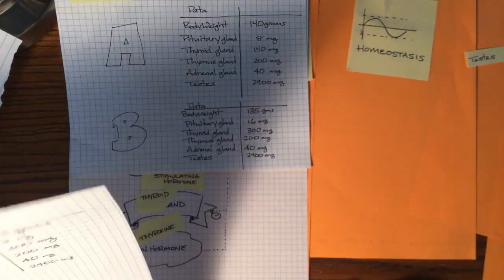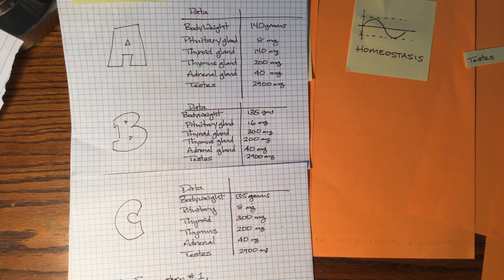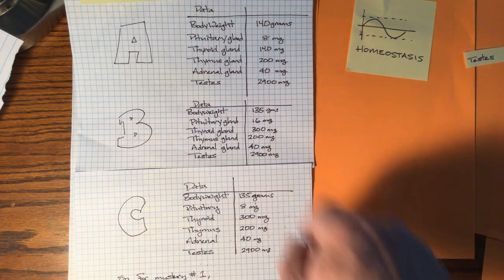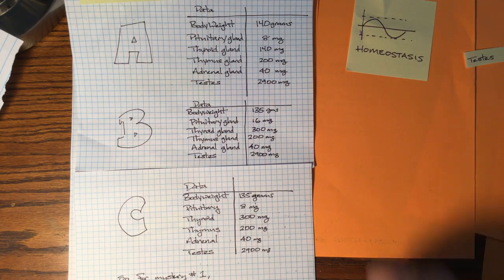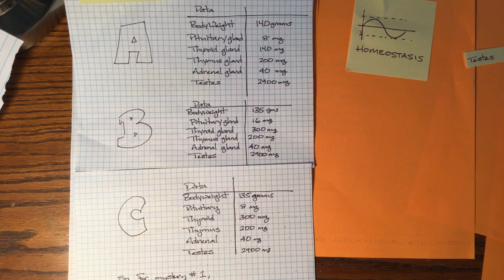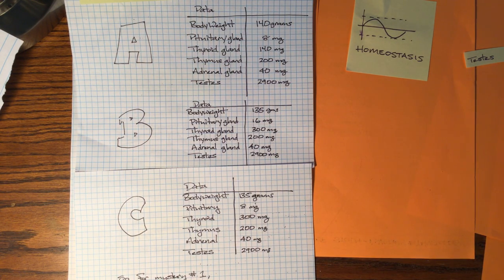I'm going to give you a little hint. Even though I'm including the adrenal gland and the thymus gland on the data and the testes, this pathway has nothing to do with the thymus, adrenal, or testes. So you can just disregard those numbers. They basically just stay the same. They might differ a little bit just because A, B, and C are not the same individual, but this pathway only affects the thyroid and the pituitary gland.